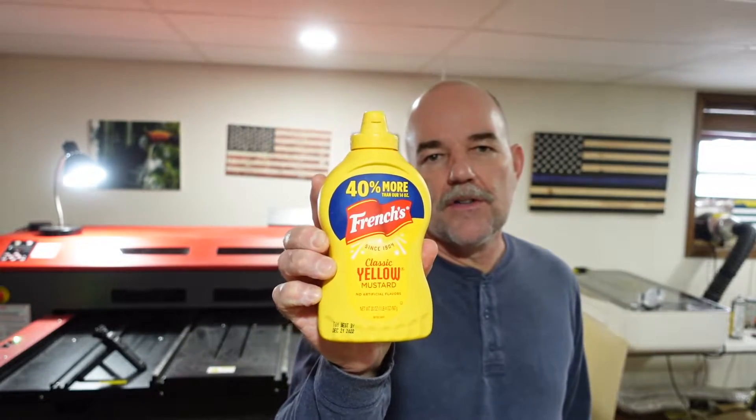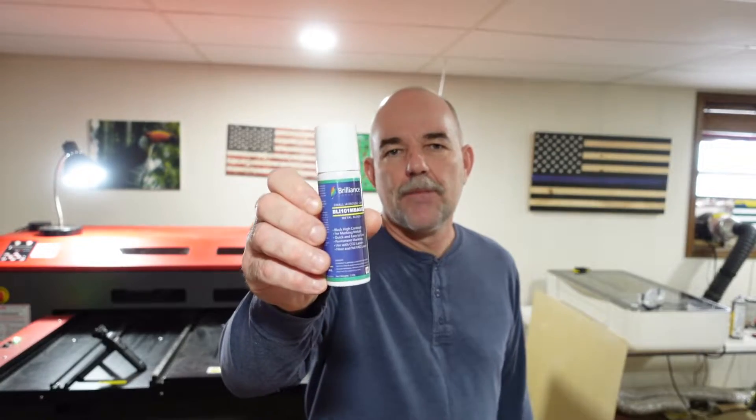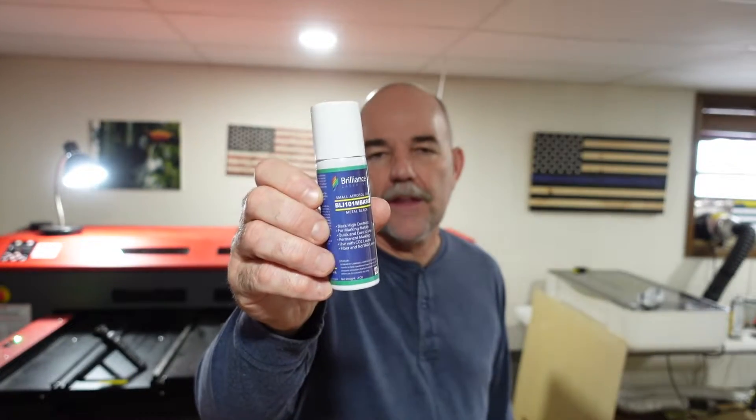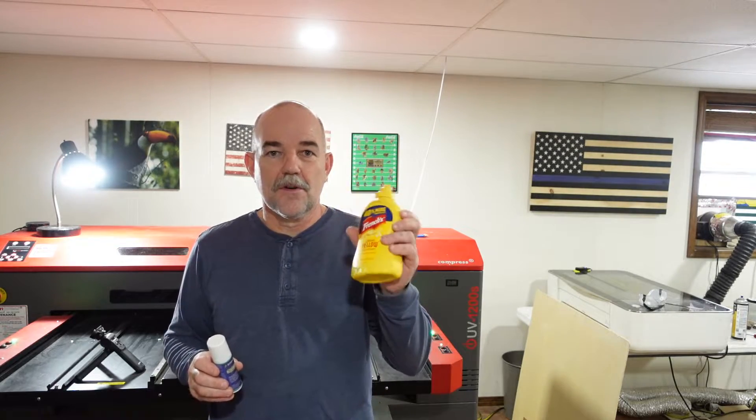First off, we're going to try the mustards. I've got a jug of yellow French's mustard here. We're going to try that. And we've got this, I got this off of Amazon. It's $30 for a two-ounce can of Brilliance. Mark the metal with the laser, that's what it's made for. So we're going to go ahead and give those a try and compare the two and see how they compare to each other. And actually, can you actually do it with the mustard? Will that actually work? So here we go.